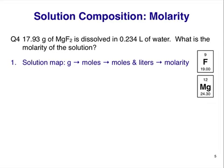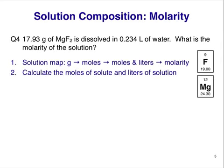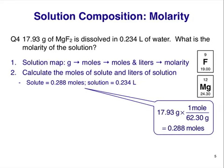We'll assume that 0.234 liters means the total volume of the solution, otherwise we can't solve it. Our next step is to calculate the quantities we need. We have 0.288 moles of MgF2 and 0.234 liters of solution. This is similar to the previous problem in that we needed to convert grams into moles. Did you do this part successfully? Here's the answer in case you didn't.